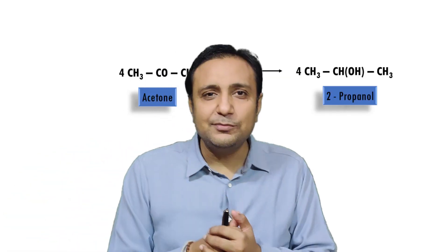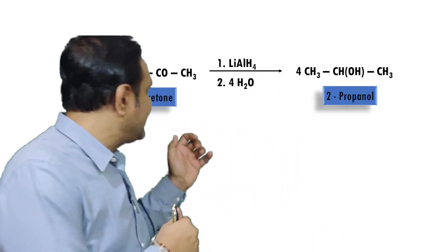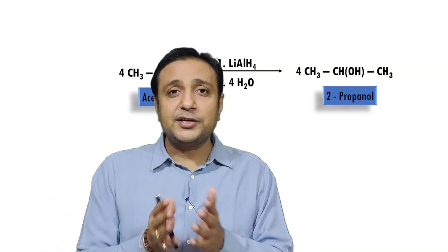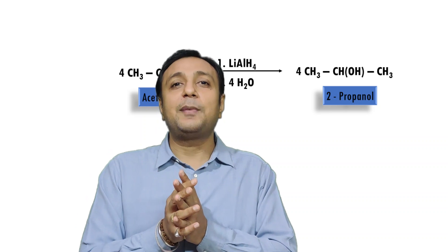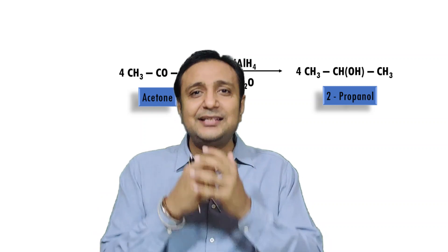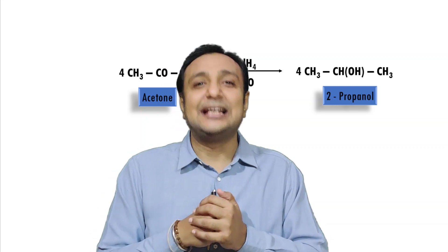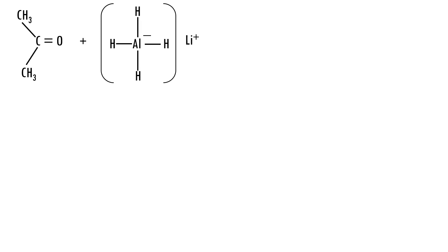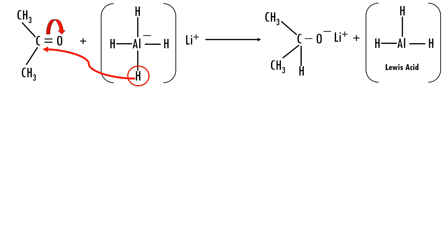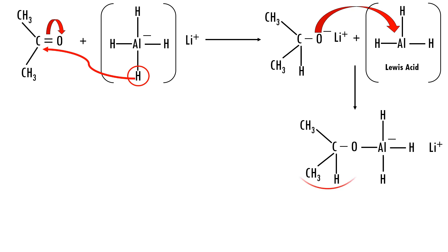To understand the mechanism of lithium aluminium hydride, consider the example of acetone. Four moles of acetone undergo reduction followed by hydrolysis to produce isopropyl alcohol. In the mechanism, when one mole of acetone reacts with one mole of LAH, one hydrogen from LAH is transferred to the carbonyl carbon — a hydride transfer — producing an isopropoxide ion along with AlH3, which acts as a Lewis acid. When this Lewis acid reacts with the isopropoxide ion, it forms a complex compound with one isopropoxide ion directly attached to aluminium.